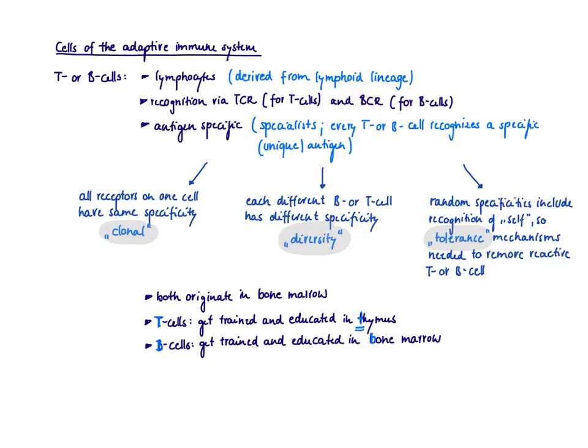So this is now in big contrast to the cells of the innate immune system. We learned that they recognize stuff via the so-called pattern recognition receptors, PRRs. So they recognize patterns. They can tell this is a virus, this is a bacteria, but they cannot tell us any specifics. However, T and B cells, via the T cell receptor and B cell receptor, they can really tell us specifics because they recognize one very specific, unique antigen.